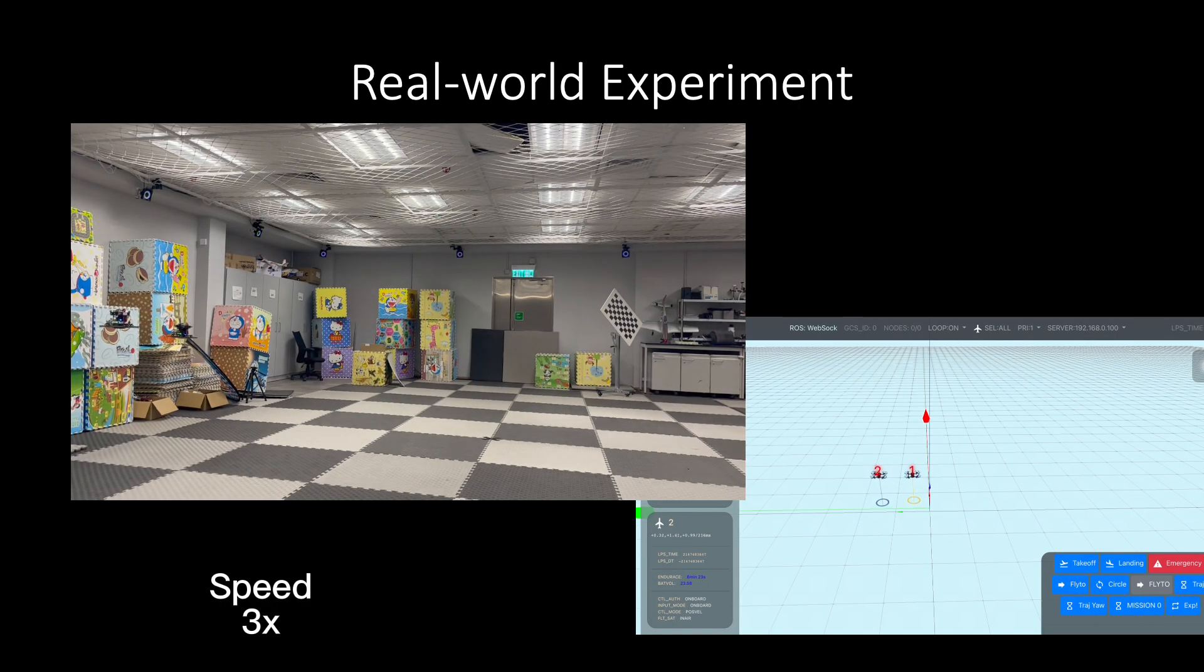In the real-world experiment, stereo cameras are adopted as input. As shown in the video, two drones continuously flight figure-8 trajectories with D-Square Slam in the loop. The right bottom view is the real-time state estimated by D-Square Slam.